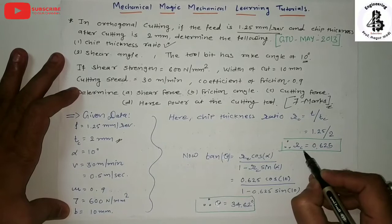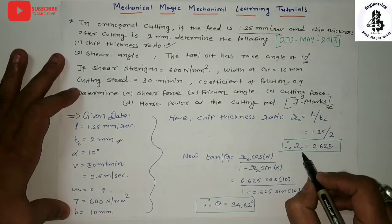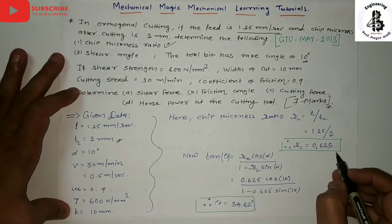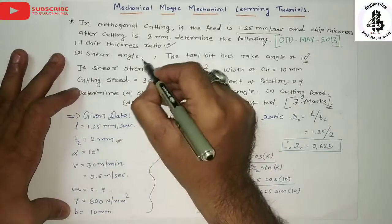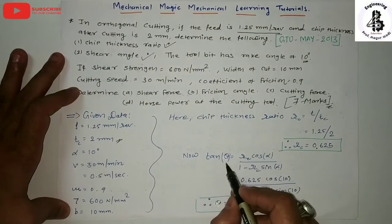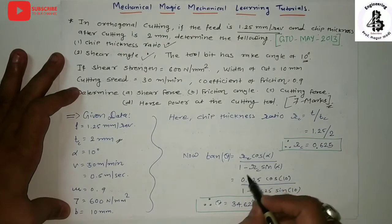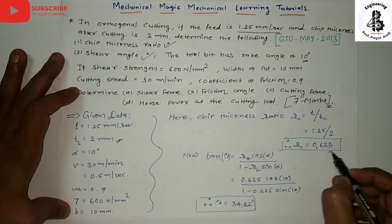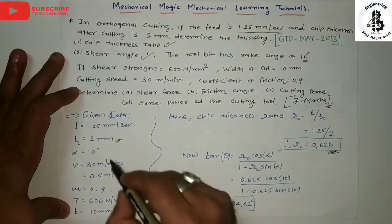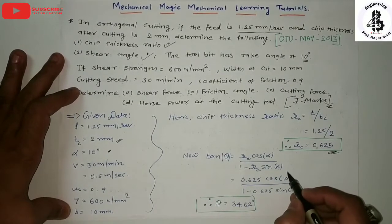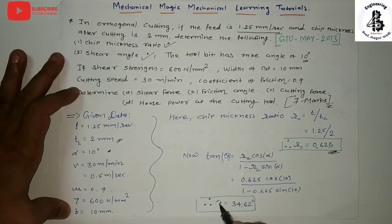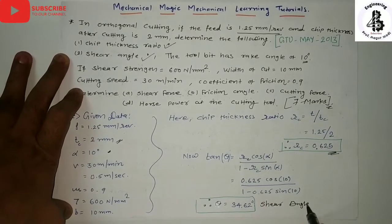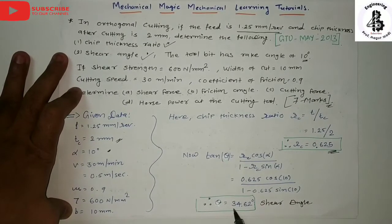The chip thickness ratio RC = 0.625. For the shear angle, we know that tan(phi) equals RC·cos(alpha) divided by (1 − RC·sin(alpha)). Substituting RC = 0.625 and alpha = 10 degrees, we get shear angle phi = 34.62 degrees.